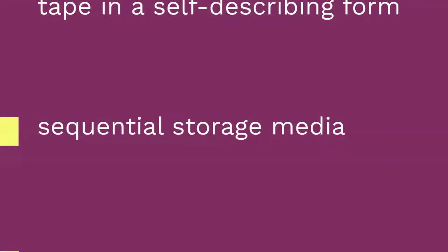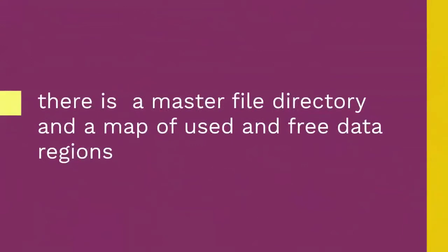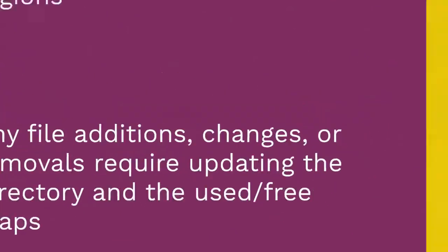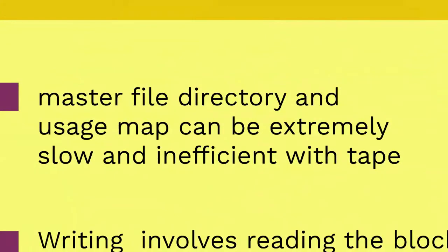In a disk file system, there is typically a master file directory and a map of used and free data regions. Any file additions, changes, or removal requires updating the directory and the used or free maps. Random access to data regions is measured in milliseconds, so this system works well for disk. Tape requires linear motion to wind and unwind potentially very long reels of media. This tape motion takes several seconds to several minutes to move the read/write head from one end of the tape to the other.